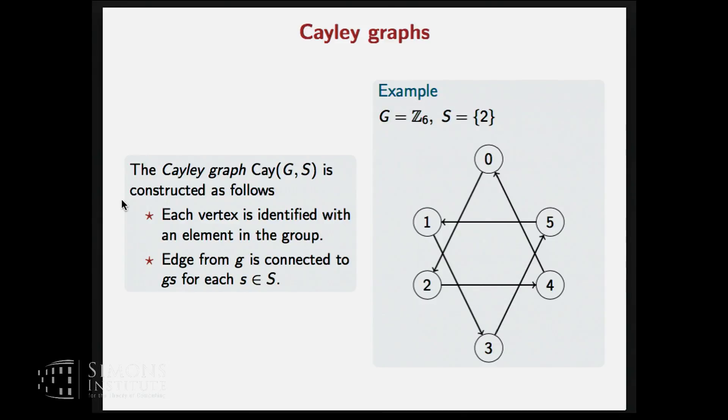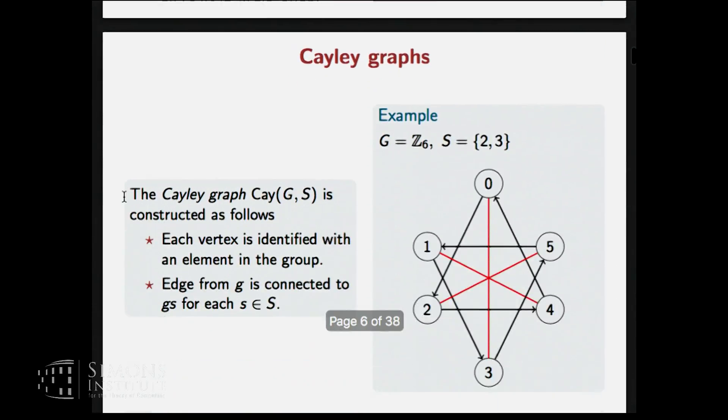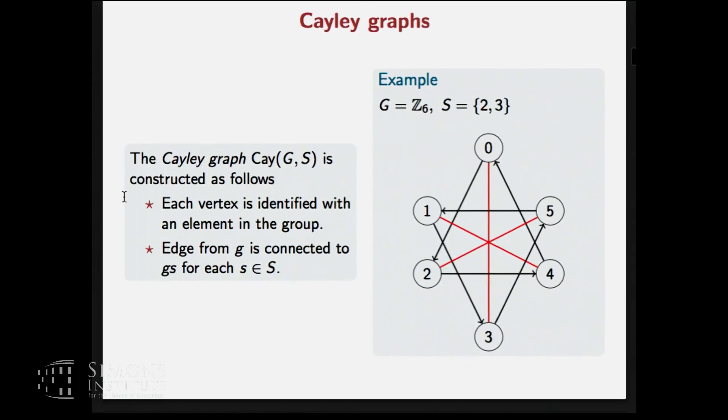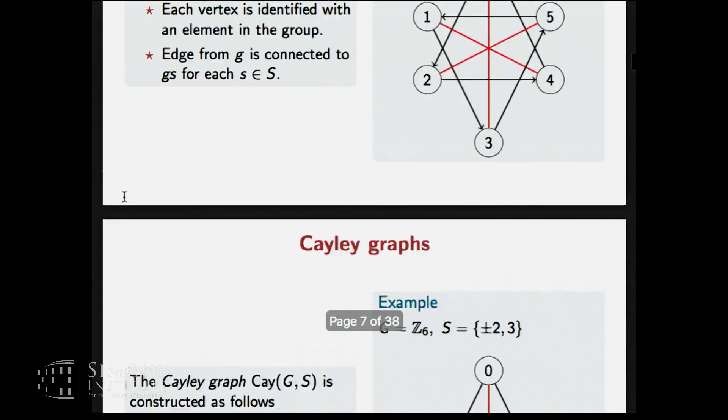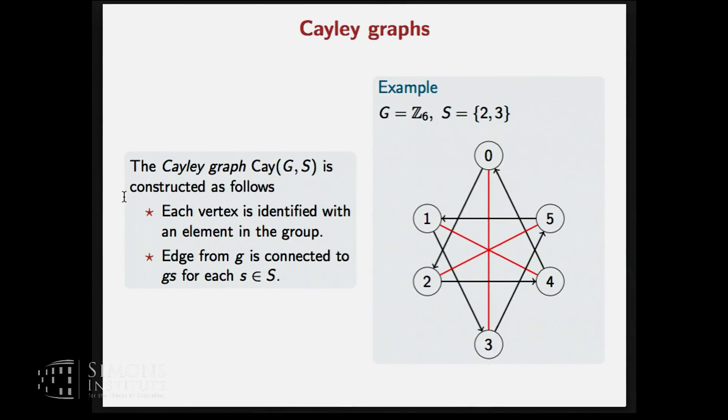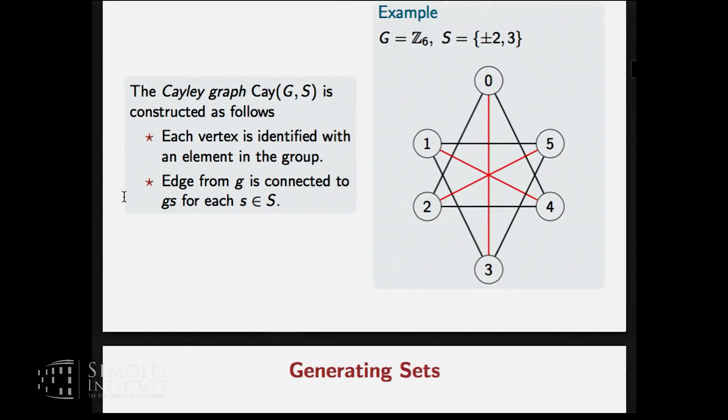So here we have a directed graph because there is no minus 2 in the set. And let's say we put another element 3 here and we get more edges. And we are interested in actually undirected graphs. So we will also put minus 2 here and we will actually achieve an undirected graph from this.